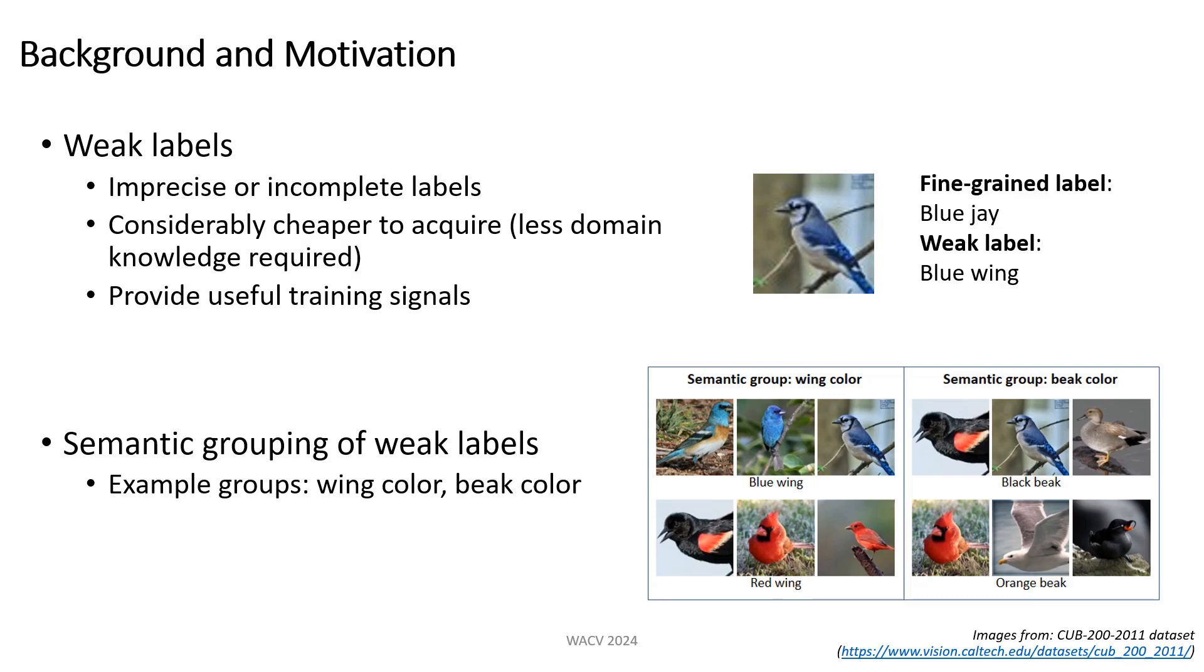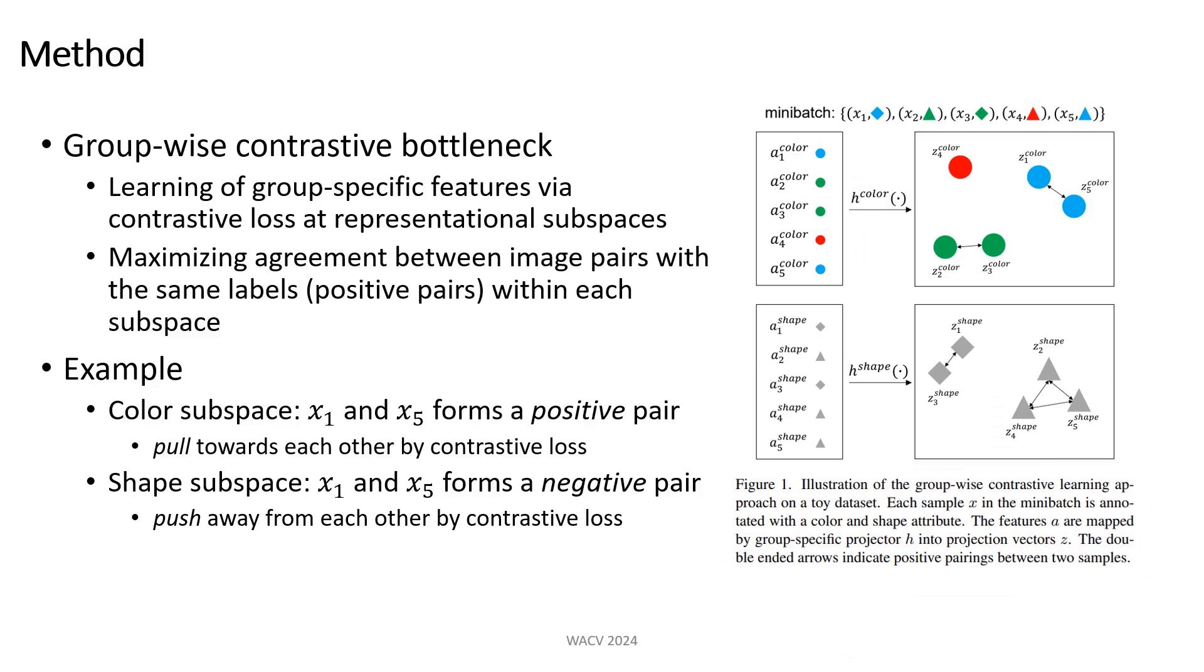Our work is motivated by the semantic grouping of weak labels. Certain labels share a common semantic group which can be utilized for visual representation learning. For instance, the labels blue wing and red wing can be grouped under the same semantic group of wing color.